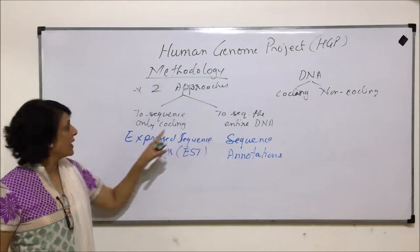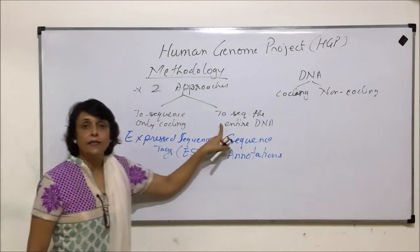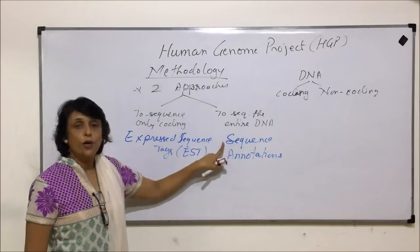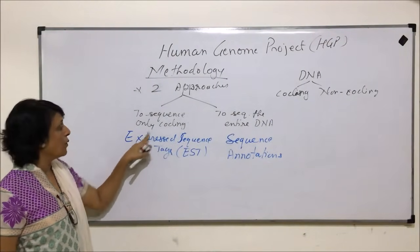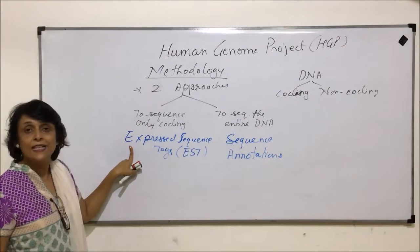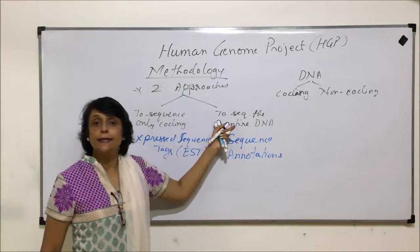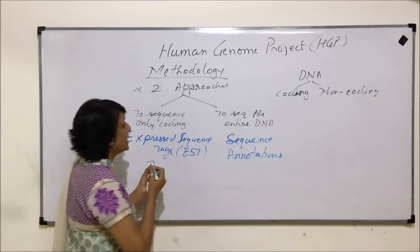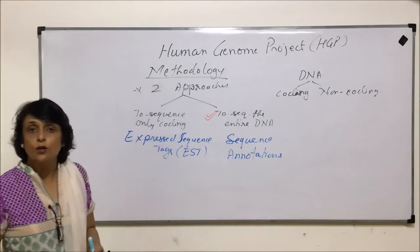This approach of sequencing the entire DNA was called Sequence Annotation. The original ideas came from two groups of scientists: one proposed starting with only the coding part, the other said to sequence the entire DNA — both coding and non-coding. Sequencing only the coding part was termed Expressed Sequence Tags, and sequencing the entire DNA was termed Sequence Annotation, and this was the approach actually followed.